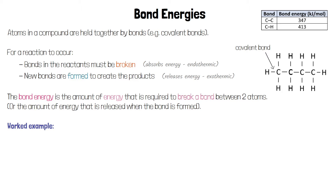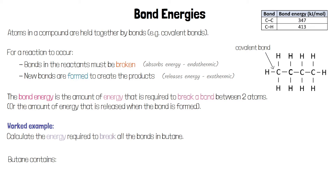We can use this information to calculate the energy required to break all the bonds in a molecule of butane. We need to look at the types of bonds present and how many there are of each type. For the carbon-carbon bonds, there are 3 of these bonds in a molecule of butane. If each requires 347 kJ per mole to break, we multiply that by 3, giving us 1,041 kJ per mole.